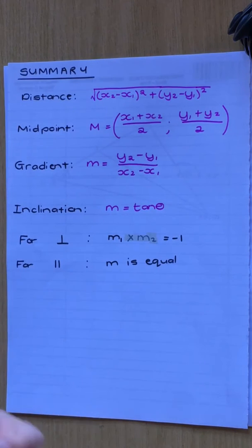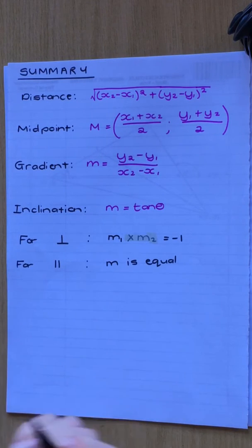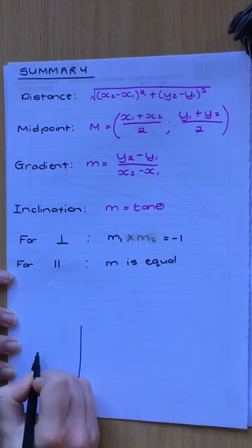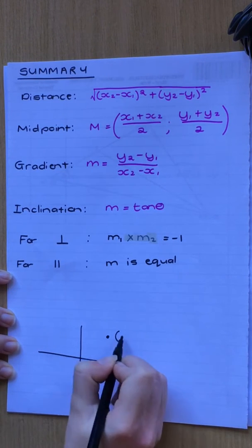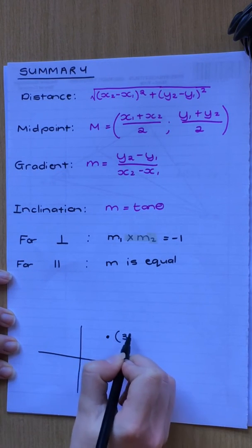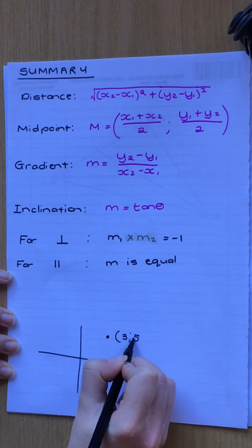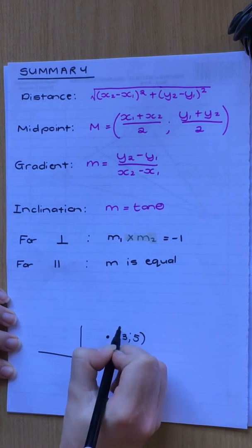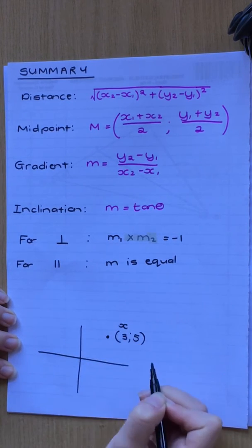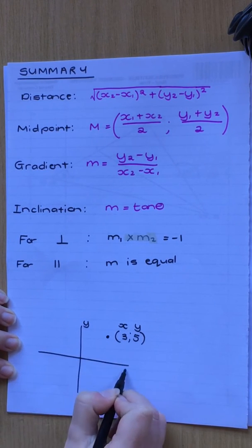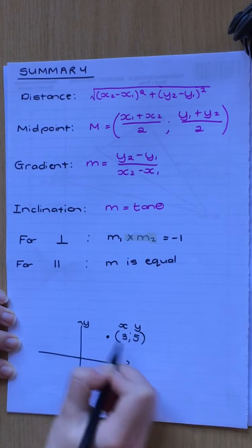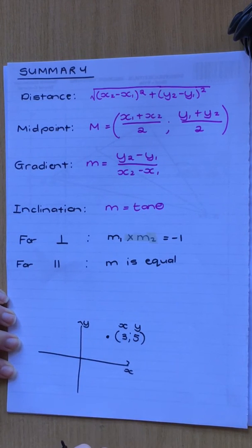In analytical geometry, your x and your y are your coordinates. So for example, if I have my set of axes, and this is the point 3 and 5, this will represent your x and this will represent your y. You guys know this — this is your x and y axis.